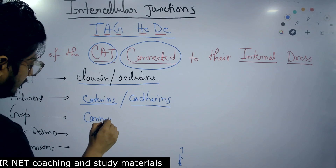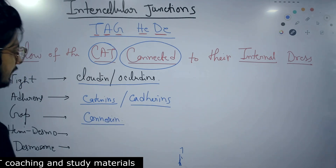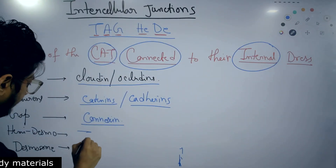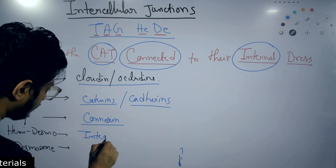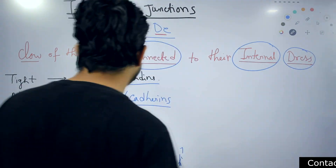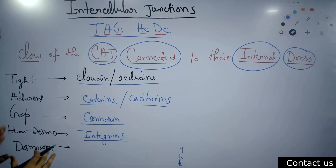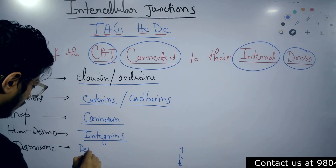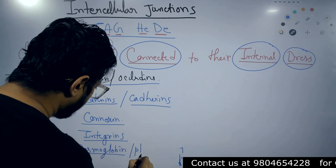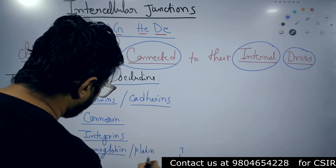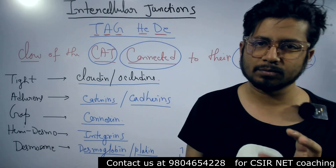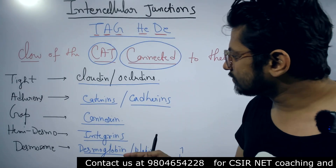CONNECTED refers to gap junctions — connexin is the protein involved in gap junctions. TO THEIR gives us integrins, which are part of hemi-desmosomes. DRESS gives us the desmosomes — desmoglein, desmoplakin, and desmocollin are all proteins involved in the structure of desmosomes.